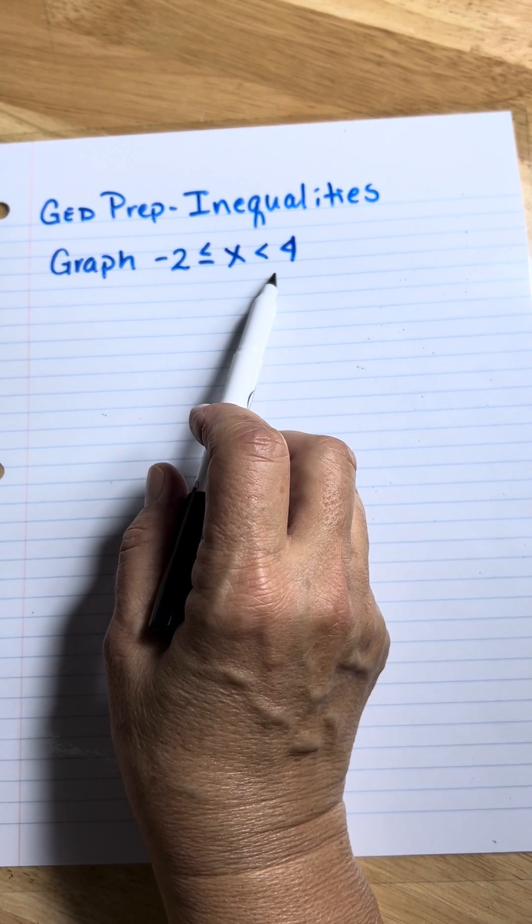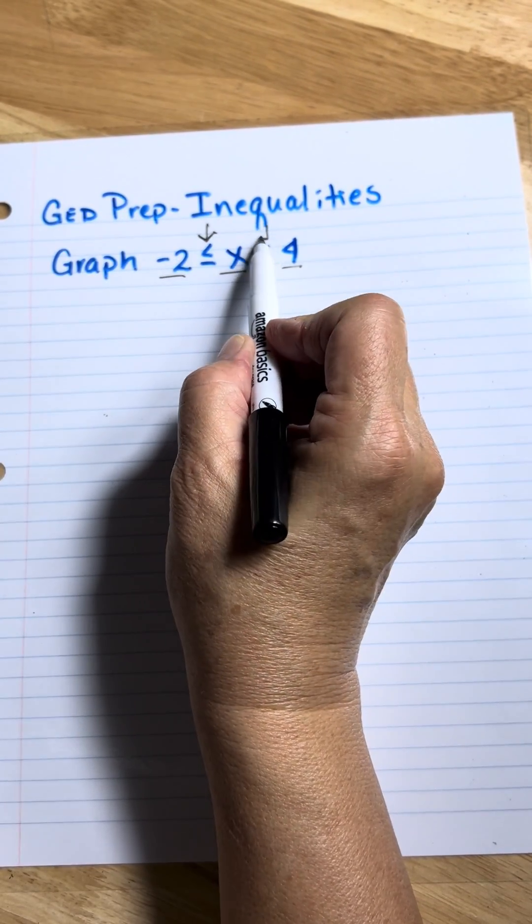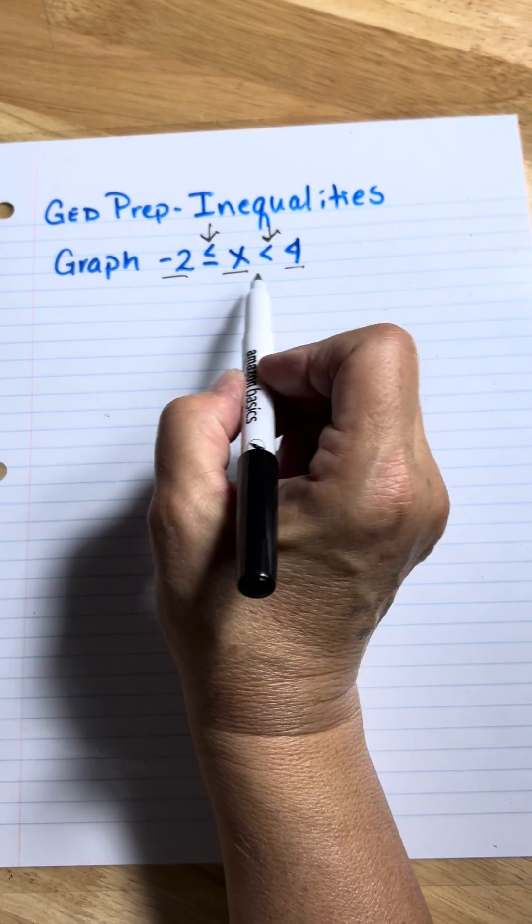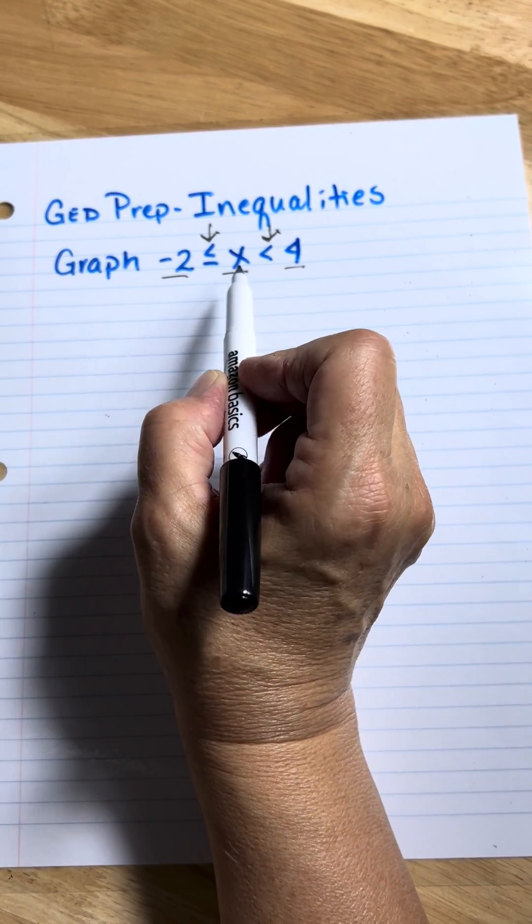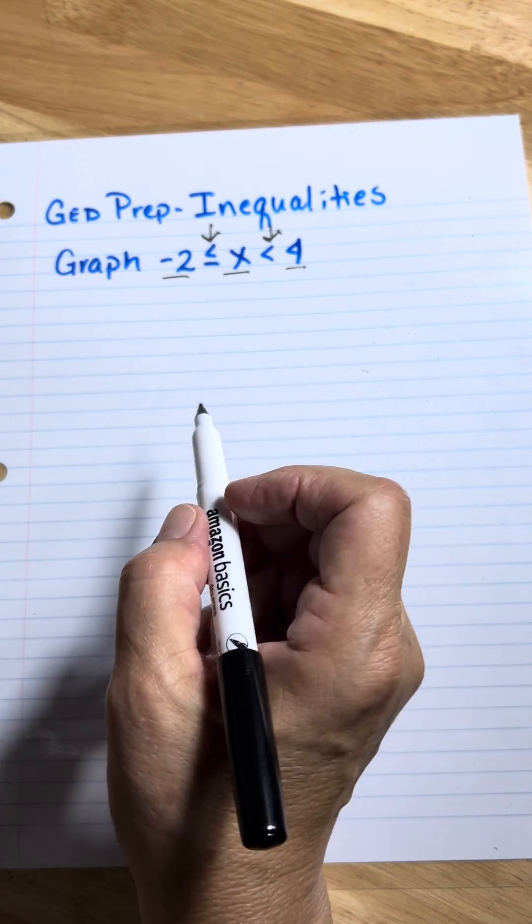Now this is a compound inequality because there's three parts to it. You see it's separated by two different signs. And a lot of times you can just graph it by looking at it, but if you're stressed out, as in the test, let me show you how you can make this a little bit smaller.